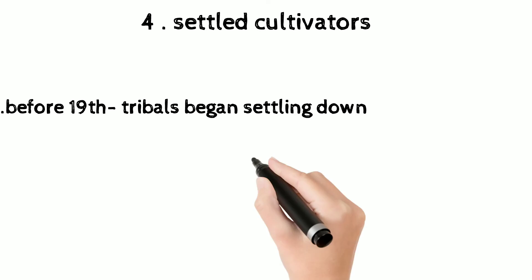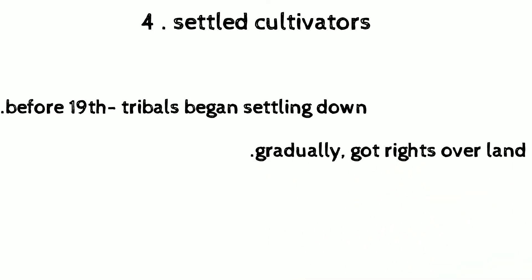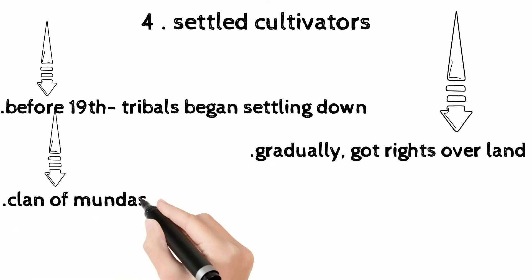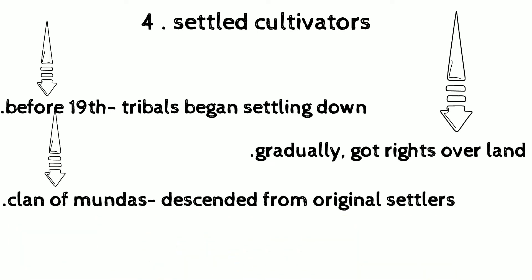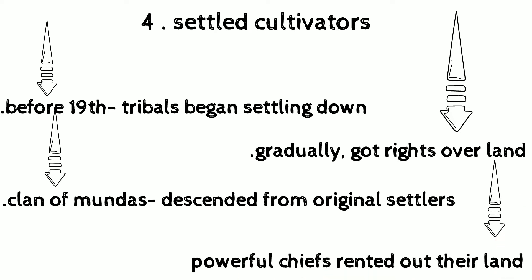Today we will discuss the fourth means of livelihood: settled cultivators. Before the 19th century, some tribal groups began settling down — for example, the clan of Mundas. They gradually got rights over their land. Their ancestors grabbed huge areas of land, so their descendants became the original settlers and got the rights over that land.